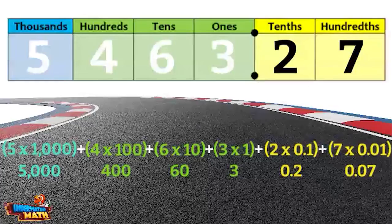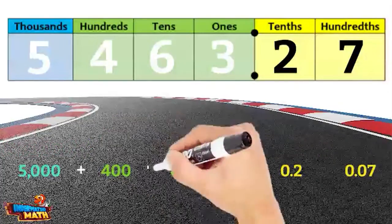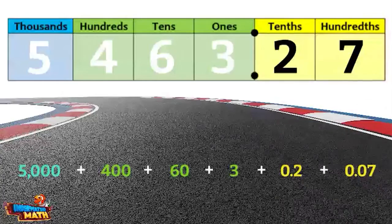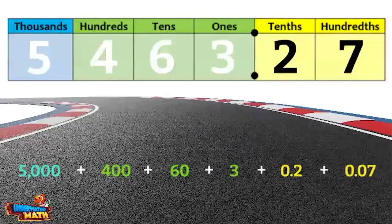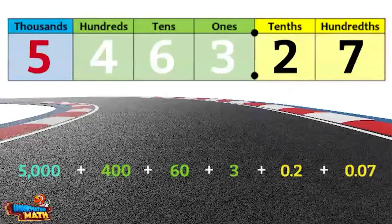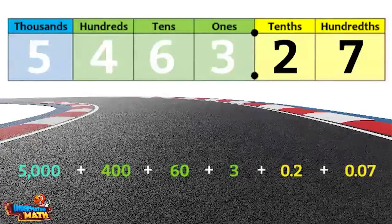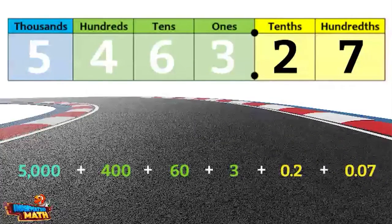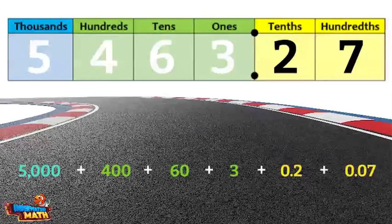You have probably noticed that the value of each digit also corresponds with which place that digit is in. For example, the five is in the thousands place and has a value of five thousand. So even if you didn't find the expanded notation first, you should still be able to find the value of any digit, just by knowing what place it's in.